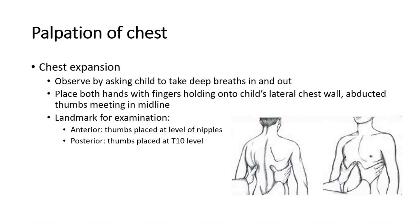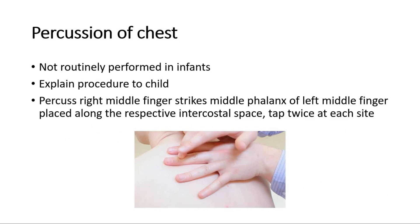After palpation, we move on to percussion of the chest. This is not routinely performed in infants. Explain the procedure to the child — for example, saying 'I am going to make your chest sound like a drum' before we do the percussion. The normal percussion technique involves percussing with the right middle finger, which strikes the middle phalanx of the left middle finger placed along the respective intercostal space, and tapped twice at each site.